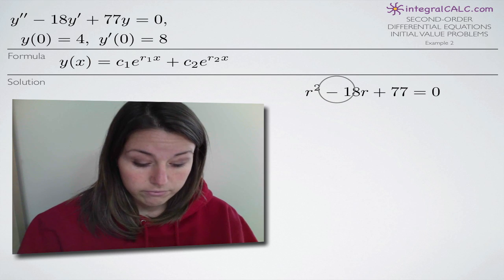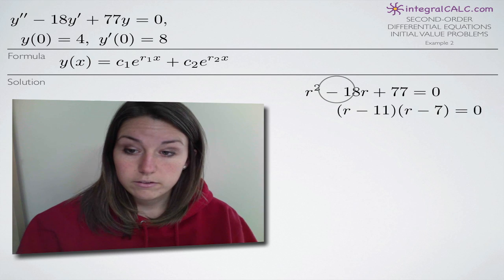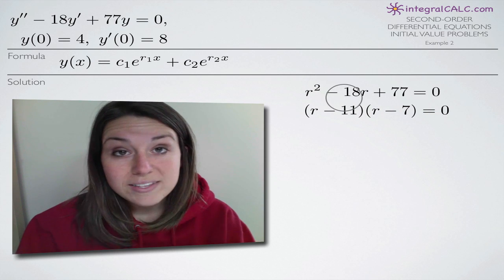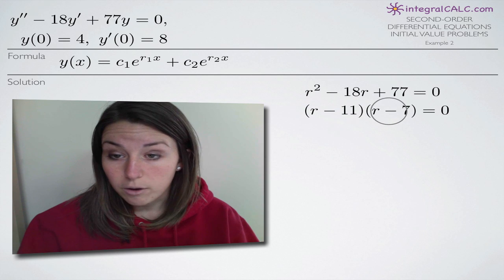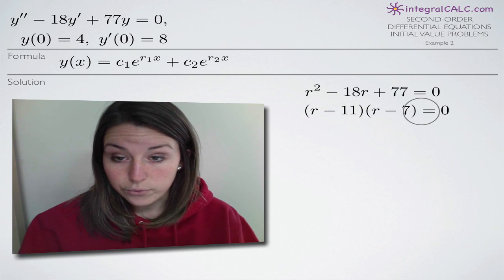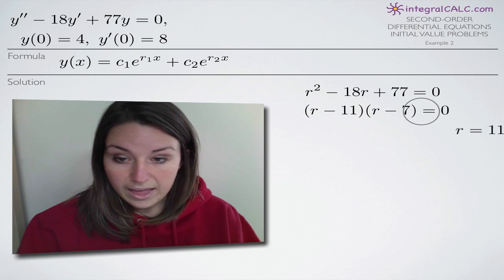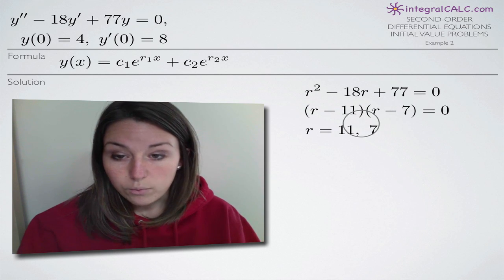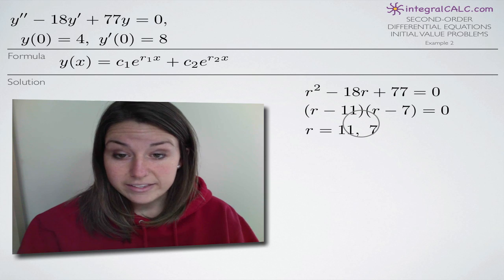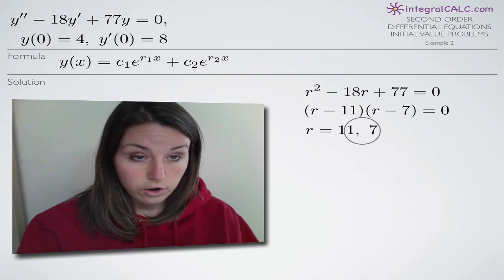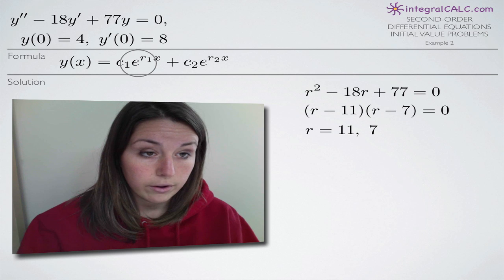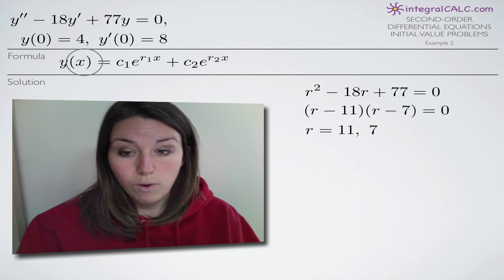Now we're going to factor this to solve for r. This one's easy to factor — we end up with r minus 11 times r minus 7 equals zero. When we solve this for r, we get two solutions: 11 and 7. These are our two solutions for r and we're going to plug them into our formula for y of x.